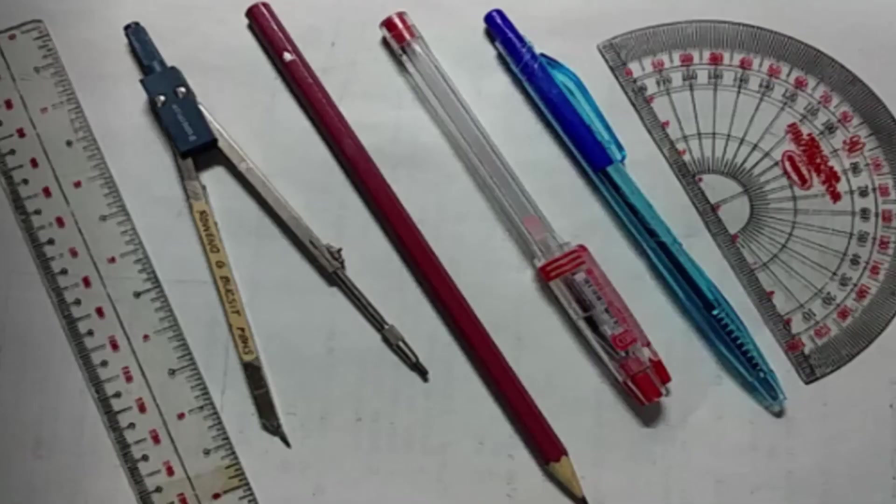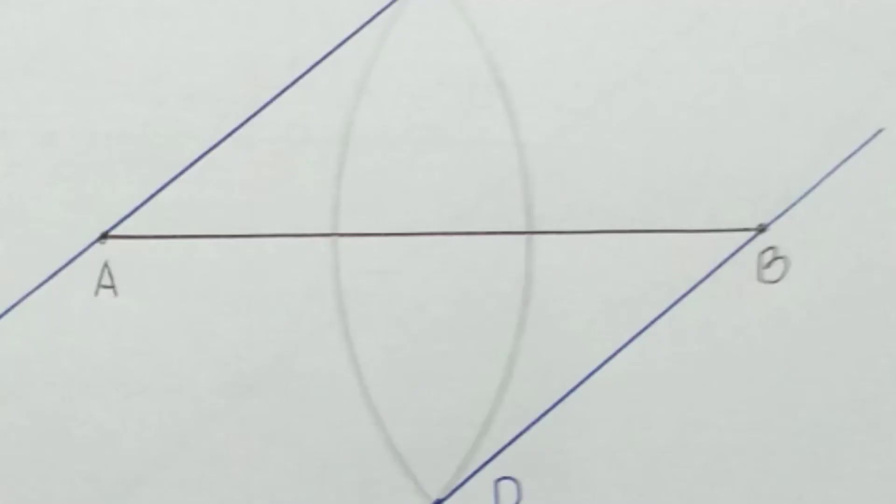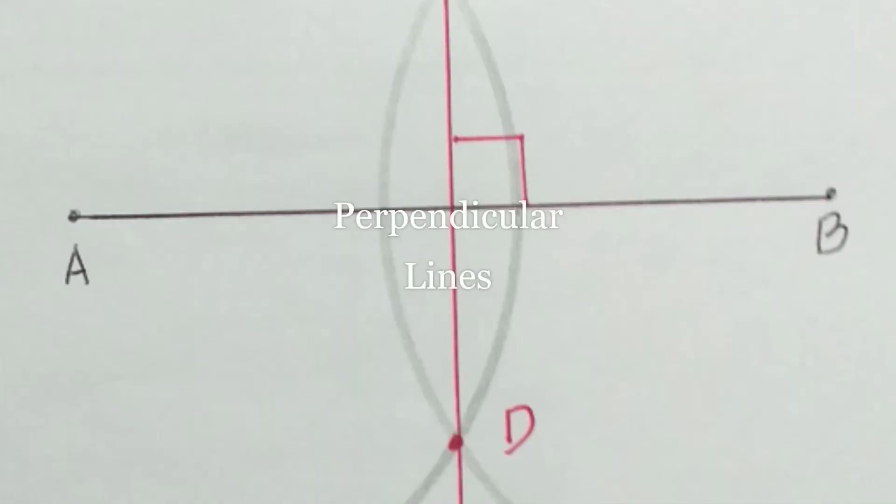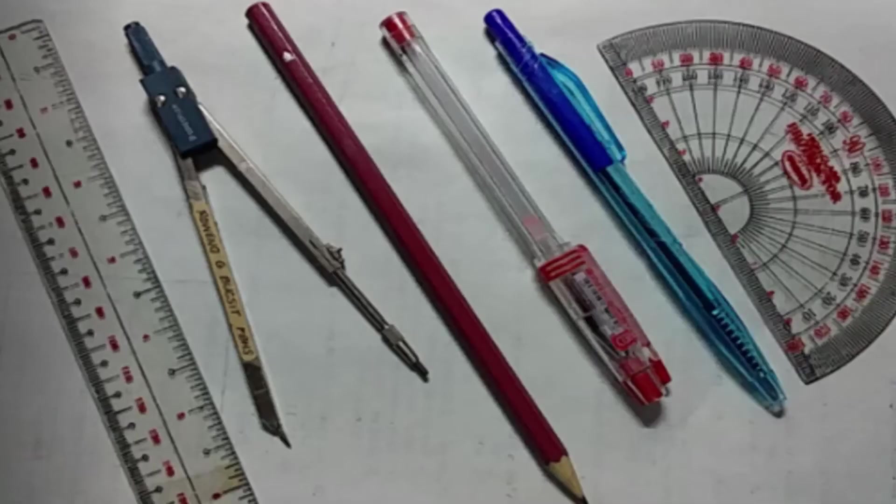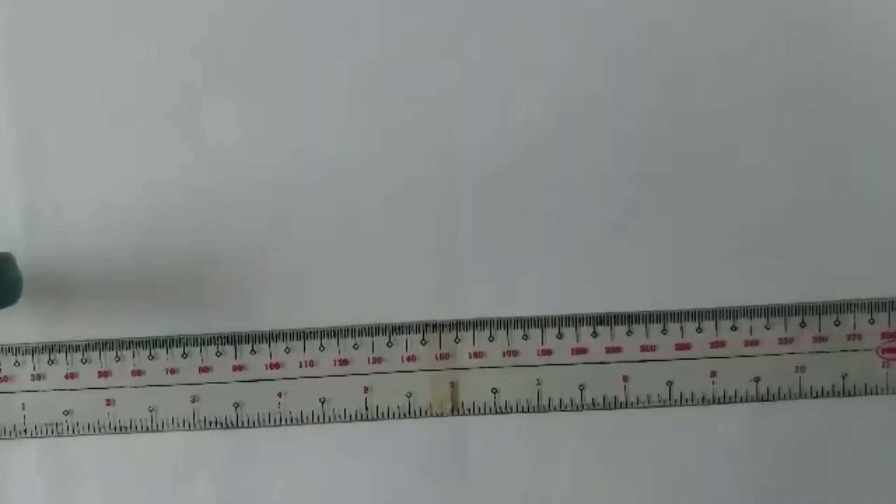We are done now with the following constructions: bisector of the line segment. We were able to construct parallel lines and perpendicular lines. Now this time, let's move on to angles. We are going to construct now the bisector of an angle.